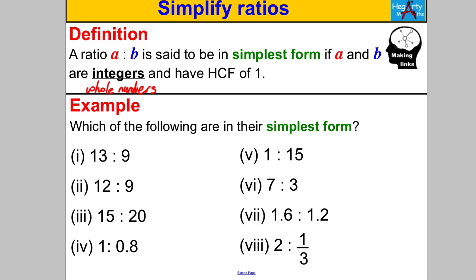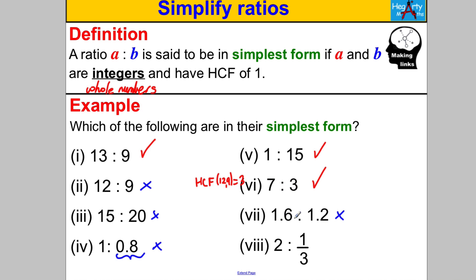Now we know what simplest form means — let's identify which of the following are in simplest form. 9 to 13: they are integers and their HCF is 1, so yes. 12 to 9: integers, but HCF is 3, so not in simplest form. 15 to 20: both divisible by 5, so not simplest form. 0.8 to 1: not in simplest form because 0.8 is a decimal. 1 to 15 and 7 to 3 are both in simplest form. The last two are not — they contain decimals or a fraction.